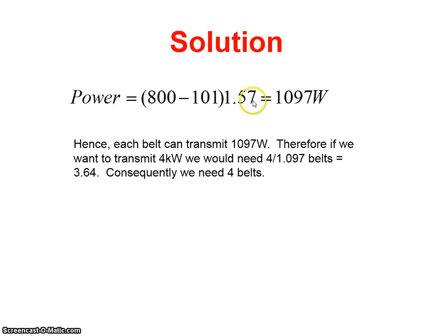When I put in the velocity and multiply it by 800 minus 101, I get that each belt can transmit 1.097 kilowatts.